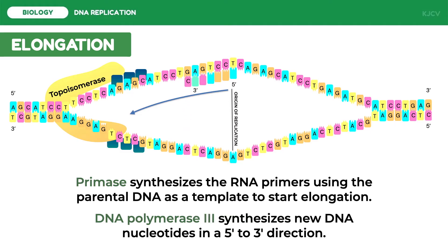Remember that in DNA base pairing, adenine pairs with thymine and vice versa, and guanine pairs with cytosine and vice versa. On the other strand, primase also simultaneously adds RNA primers to start elongation.